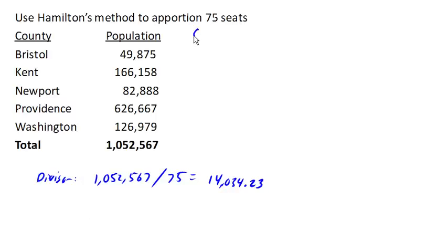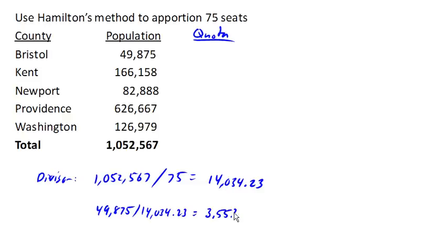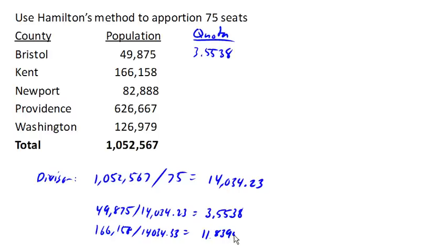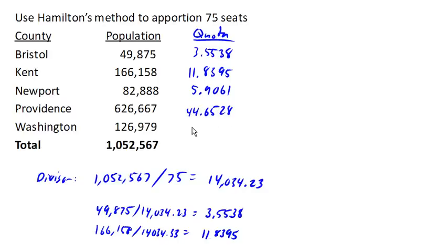Next, we need to calculate our quotas. We calculate the quotas by taking the individual populations and dividing them by the divisor. For Bristol, we end up with 3.5538. For Kent, we take 166,158 and divide it by our divisor, getting 11.8395. Repeating that process for the rest of the counties, we get 5.9061, 44.6528, and for Washington County, 9.0478.